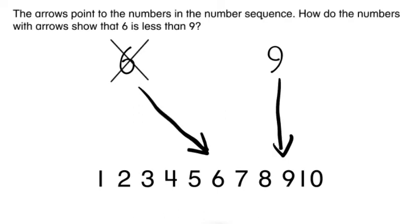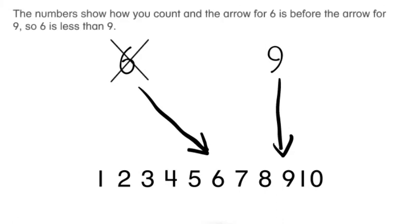The arrows point to the numbers in the number sequence. How do the numbers with arrows show that six is less than nine? The numbers show how you count, and the arrow for six is before the arrow for nine, so six is less than nine.